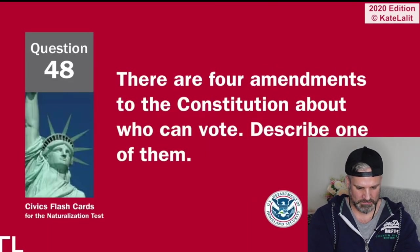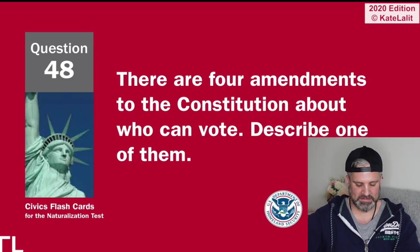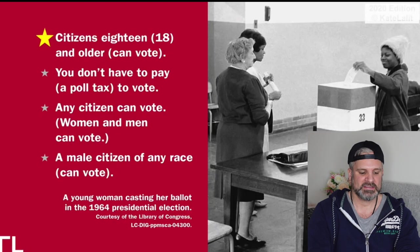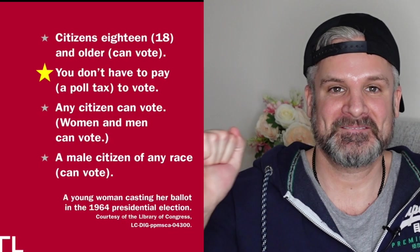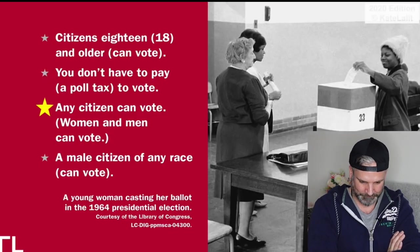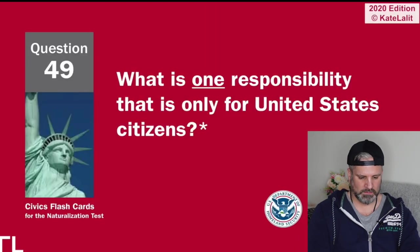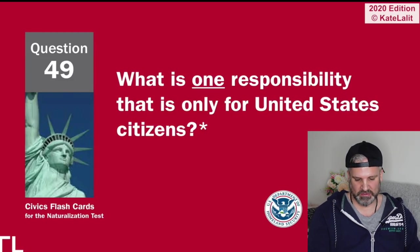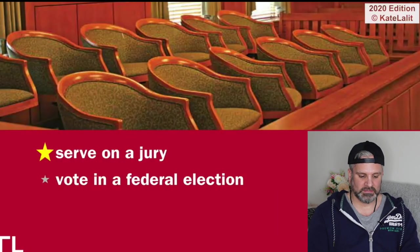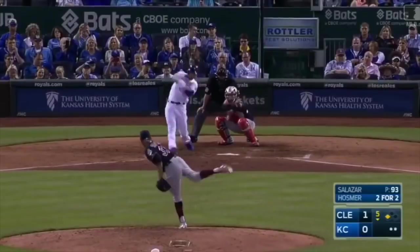There are four amendments to the Constitution about who can vote — describe one of them. Over 18, it's got to be over 18 to vote. Citizens 18 and older can vote, you don't have to pay a poll tax to vote, any citizen can vote, women and men can vote.